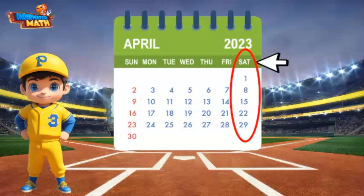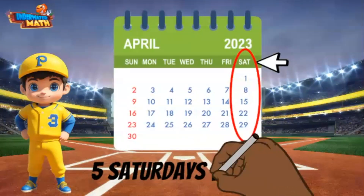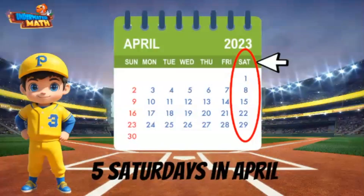Now I can count them: 1, 2, 3, 4, and 5. There are 5 Saturdays in April 2023. I will have 5 baseball games that month.